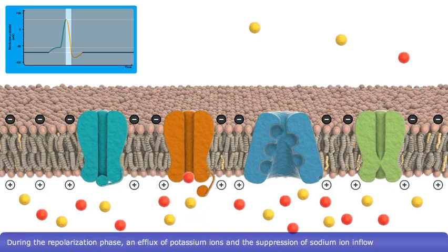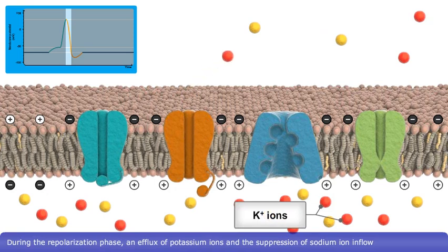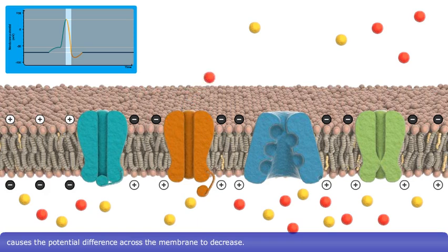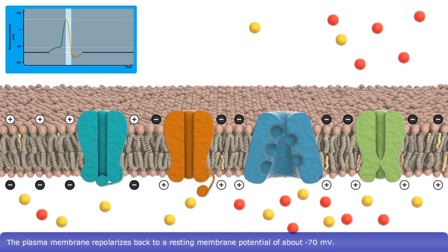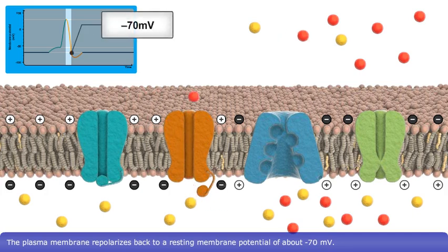During the repolarization phase, an efflux of potassium ions and the suppression of sodium ion inflow causes the potential difference across the membrane to decrease. The plasma membrane repolarizes back to a resting membrane potential of about minus 70 millivolts.